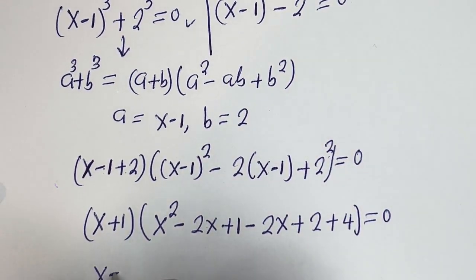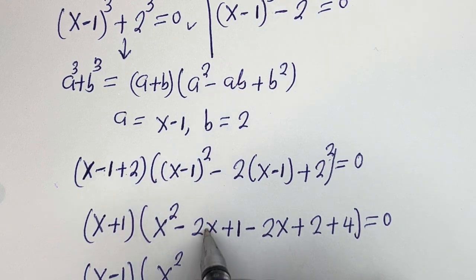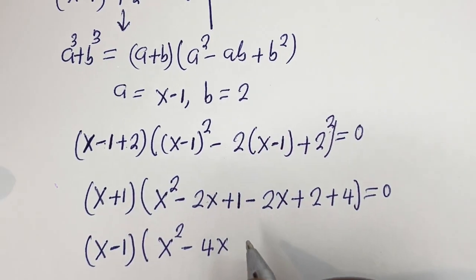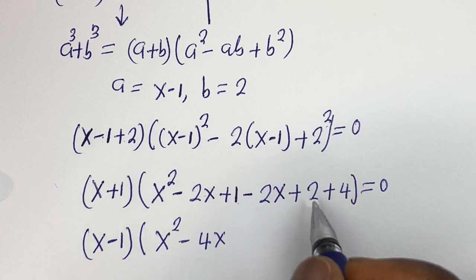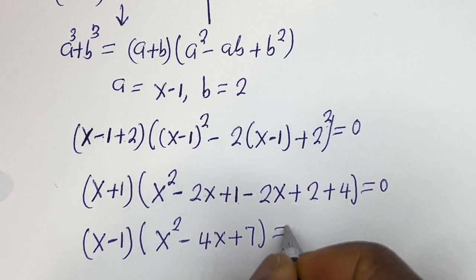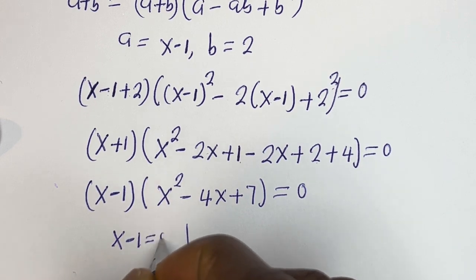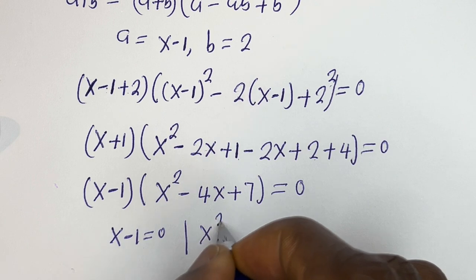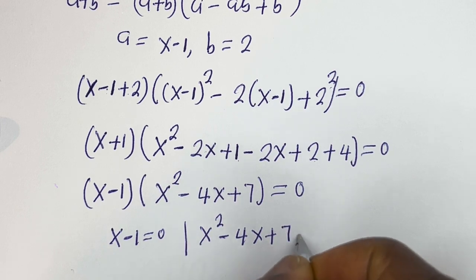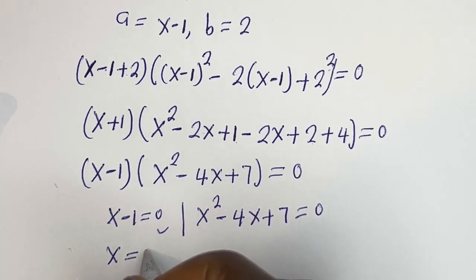So we have (x minus 1) bracket x squared minus 2x, then plus 1 plus 2, that is plus 3, plus 4, that is plus 7, equals 0. There are two sub-cases: the first is x minus 1 equals 0, and the second is x squared minus 4x plus 7 equals 0. From the first, x is equal to 1.